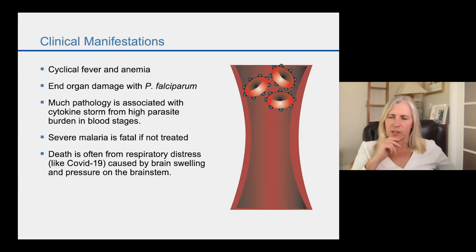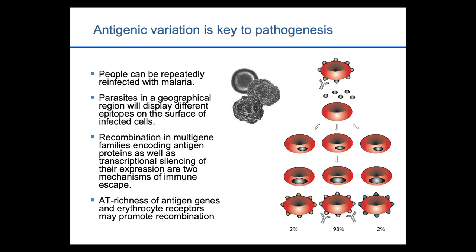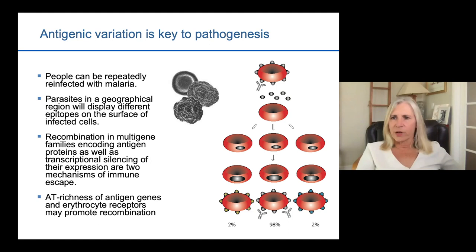Critical to the pathogenesis of malaria is the process of antigenic variation. With viral pathogens, you often get infected once and become immune. With malaria — and this is the reason we have so many cases — people get infected over and over again. In some parts of Africa, it's typical to have malaria multiple times every year, and you might have symptomatic malaria up until you're in your twenties.